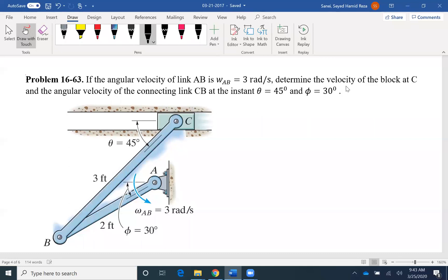So we want to find the velocity of C and we have omega AB here, and the question is asking for another omega, which is omega CB. Because we have omega AB, we can find velocity at B. And once we have the velocity at B, we can find our relative velocity equation to find the velocity at C, the velocity of interest.